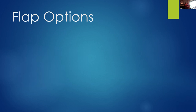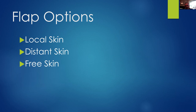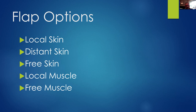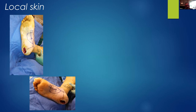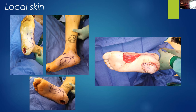Regarding flap options, I've broken them down into categories: local skin, distant skin, free skin, local muscle, and free muscle. For local skin, here's an example of a young lady who had a severe pilon fracture with significant post-tibial neuropathy that eventually developed a decubitus. The medial plantar artery flap doesn't require microsurgical reconstruction. It provides glabrous, innervated skin to the heel pad. While completing a tarsal tunnel release and finding the medial plantar artery, we can transpose that full-thickness fasciocutaneous glabrous skin paddle to her calcaneus, with the donor defect covered with Integra and then skin grafting.